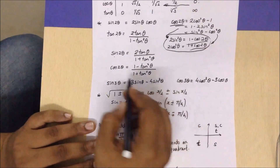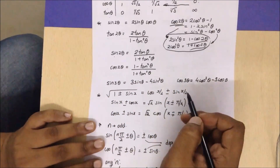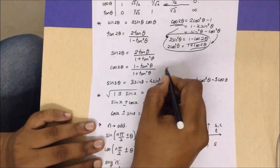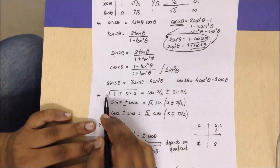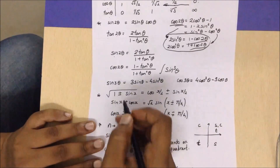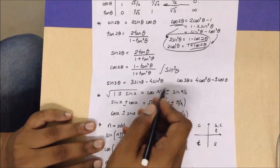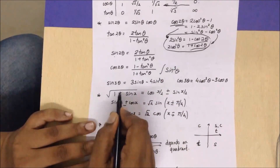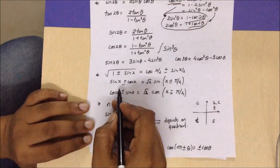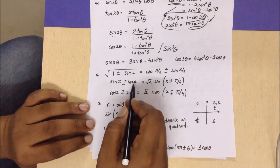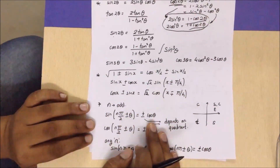The triple angle formulas for sin(3θ) and cos(3θ) help in integration when you have terms like cos³ or sin³. Also remember: if you have a (1 ± sin x) term, replace it with the corresponding squared expression. If you have (1 ± sin 2x), it becomes (cos x ± sin x)². Also, sin x ± cos x and cos x ± sin x can be replaced by their standard equivalent values.